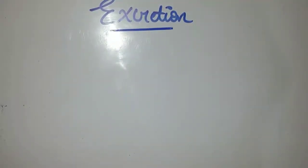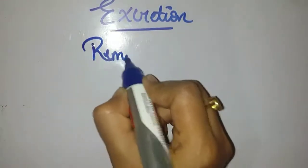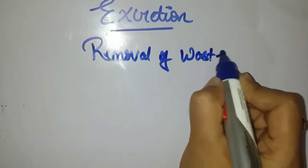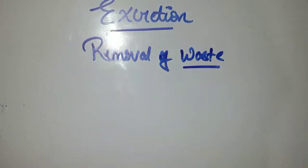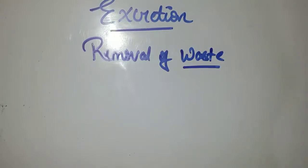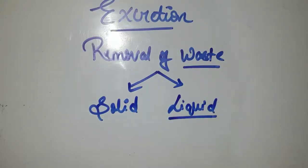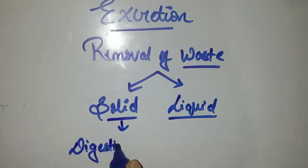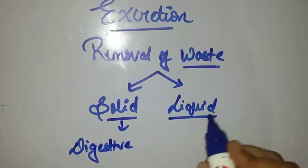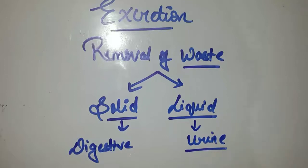Before we understand the process of excretion, our body produces two categories of waste. One is solid waste and one is waste in the form of liquid. The solid waste produced is feces, which is made through the digestive system. In liquid form, the waste made in our body is urine, and this urine is made from the organ system called the excretory system.